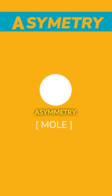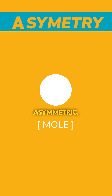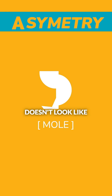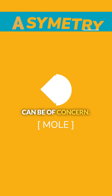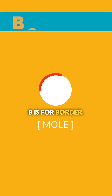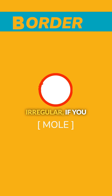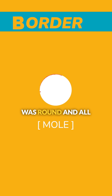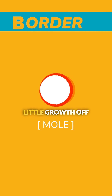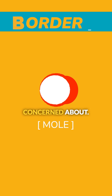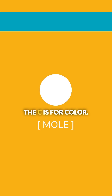The A is for asymmetry — if it's asymmetric, meaning one side doesn't look like the other, that can be of concern. B is for border; if the border is irregular, if you had a mole that was round and all of a sudden has a scalloped border, or you notice a little growth off the side of it, that's something to be concerned about.